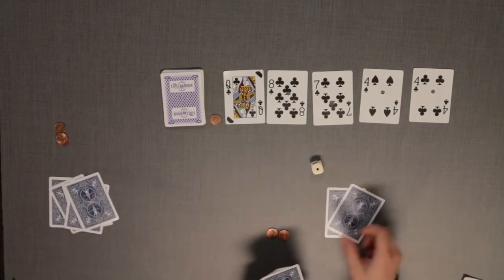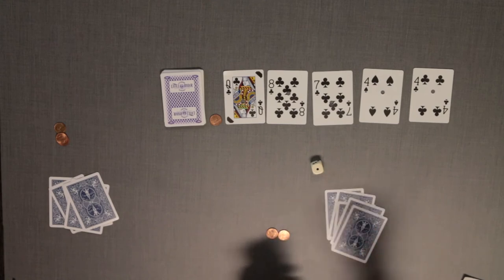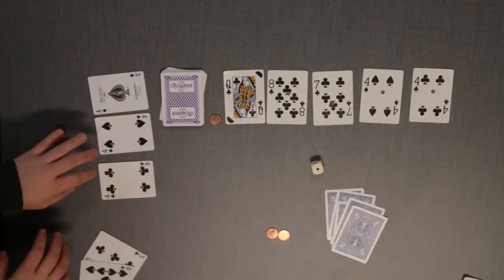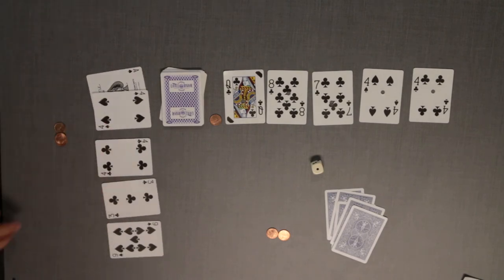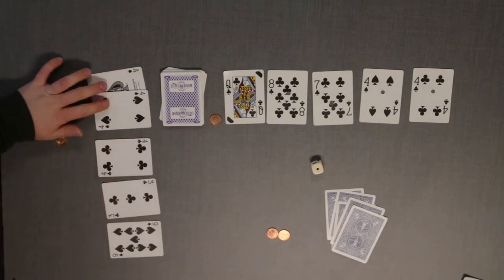The dealer then deals five black cards to each player. Using a chip or penny as a decimal point, each player rearranges their five black cards to obtain a number as close as possible to the target number.